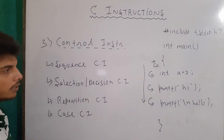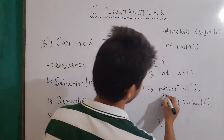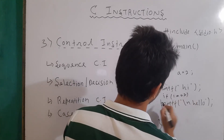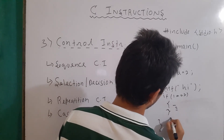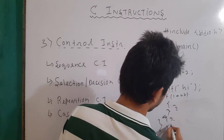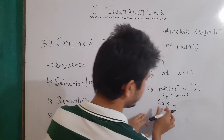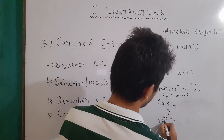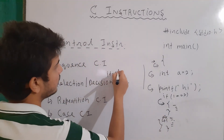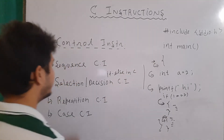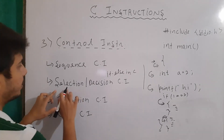Then we have selection or decision control instructions. Basically, the control will go according to a condition. For example, if we write 'if (1 == 1)' and if it is true, then execute these lines; and if it is false, execute the lines in the else block. So if the condition is true, the execution goes here, and if it is false, the control goes to the else block. We will talk about this in detail when we cover if-else in C programming.